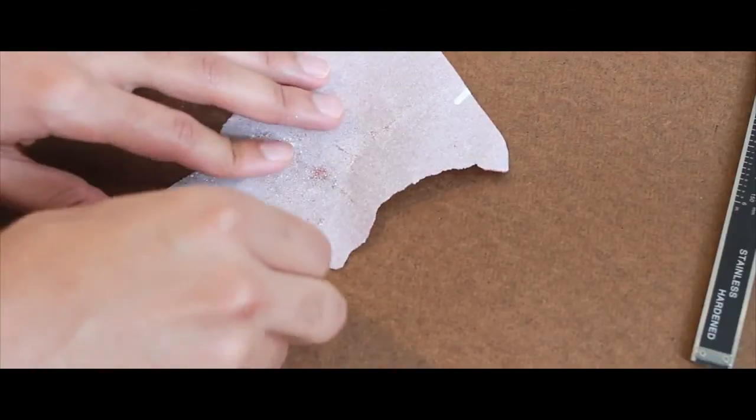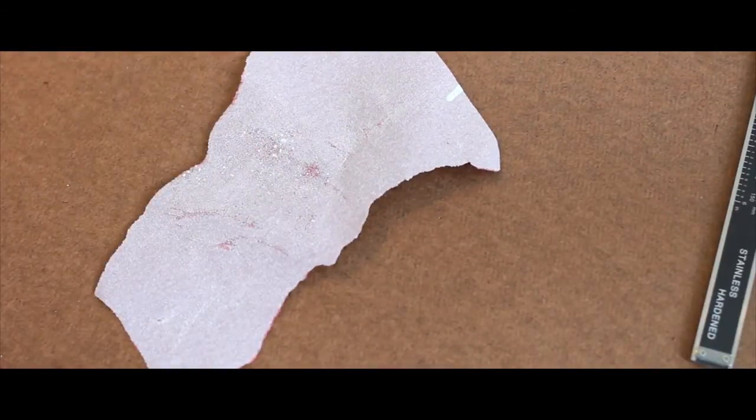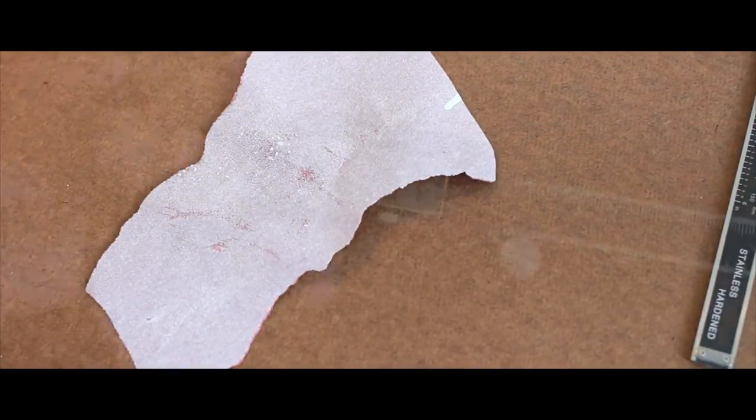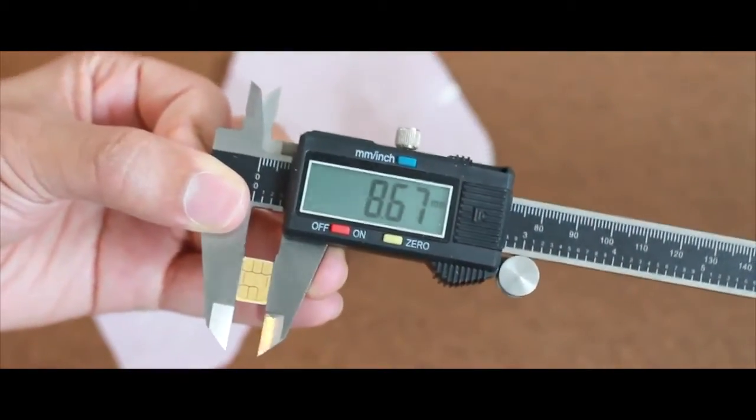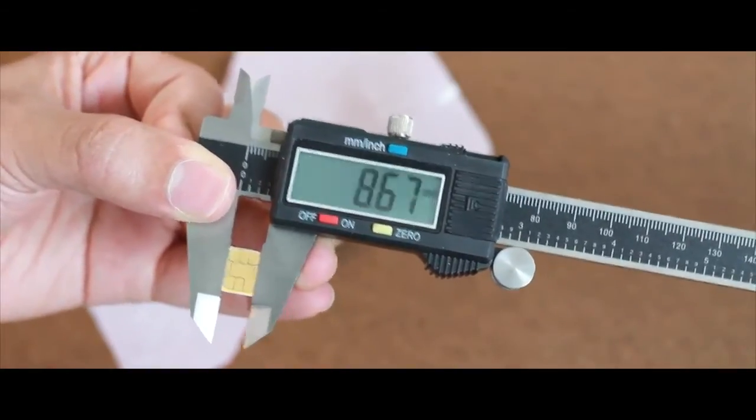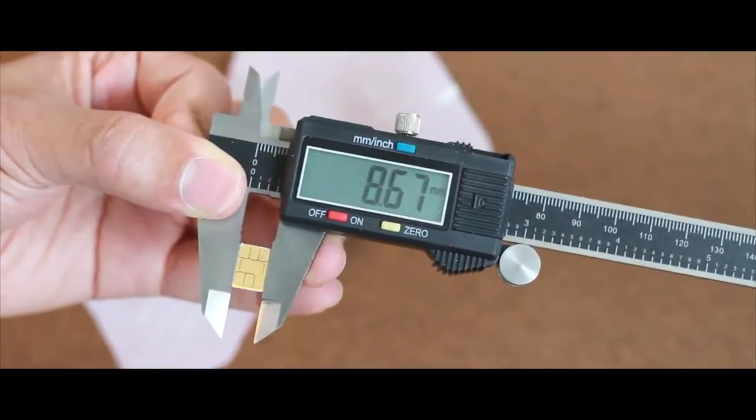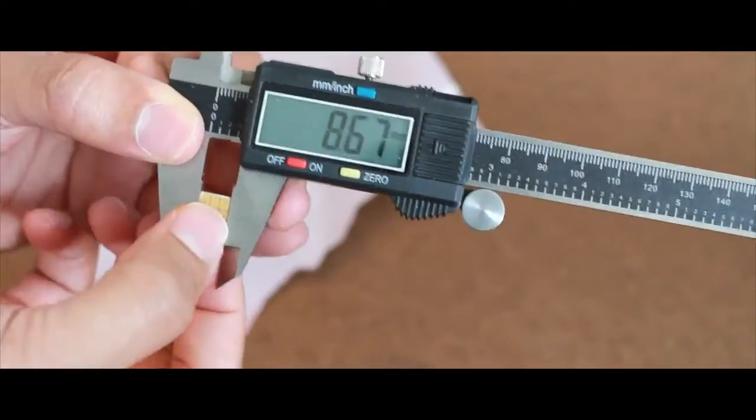Let's give it a couple more rubs on our sandpaper and see what we can get. A couple more times should do it. Okay, let's measure now. There we go: 8.67. So I actually got a little more off than I wanted to, but that's within 0.13 millimeters. That should fit within that SIM card tray just fine if past experiences with cutting down micro SIMs is any indication.